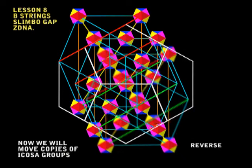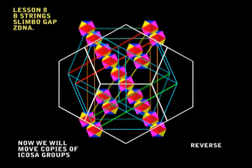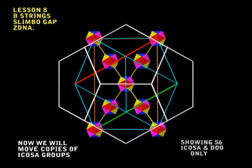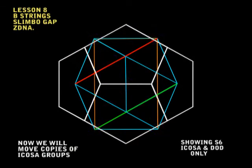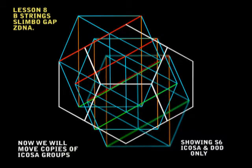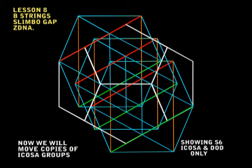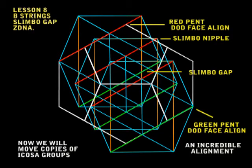So now we'll go back to where we started and we'll repeat this, just showing the icosas and the pentagons. And you can see that the red and green pentagons line up perfectly to the faces of the dodeca. And we also show a couple of pentagons in the center with a smaller gap. I showed this icosa gap in my earlier videos and I called it the slimbo gap, but I think in this scene you can make more sense of it.